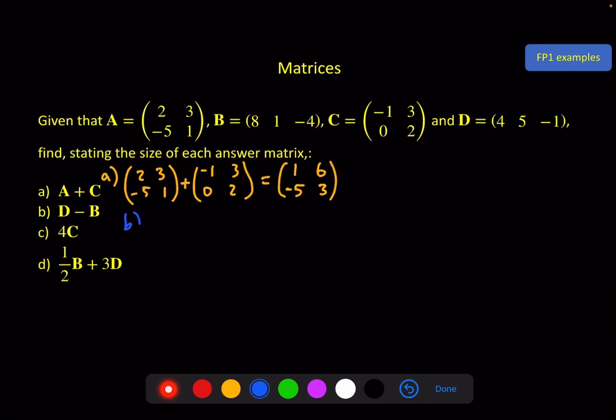That is part A, onto part B. Here we have D, 4, 5, minus 1, minus B, 8, 1, minus 4, and that is equal to minus 4, 4, and 3. I've just realized I haven't finished part A, so let me go back here. This is a 2 by 2 answer matrix, and here we've got a 1 by 3 answer matrix.